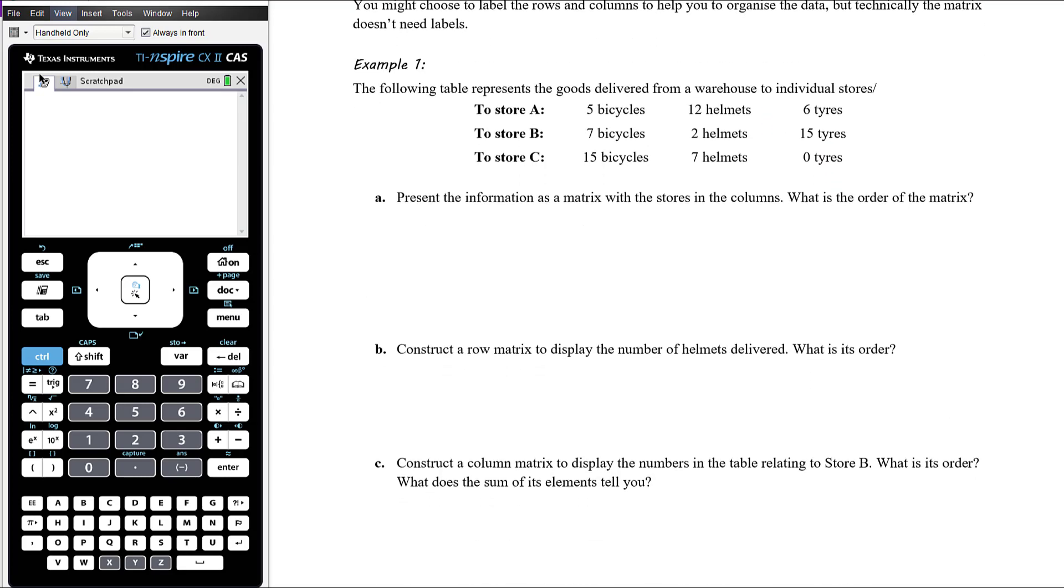So the following table represents the goods delivered from a warehouse to individual stores. To store A, there were five bicycles, twelve helmets and six tyres delivered from the warehouse. From the warehouse to store B, seven bicycles, two helmets, fifteen tyres. And from the warehouse to store C, fifteen bicycles, seven helmets and zero tyres. So we want to, in part A, present the information as a matrix with the stores in the columns. So we've clearly got nine pieces of data in a three by three format.